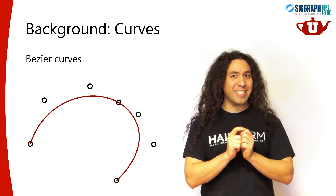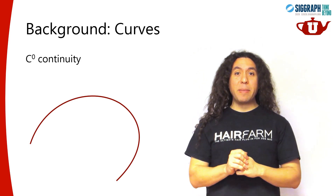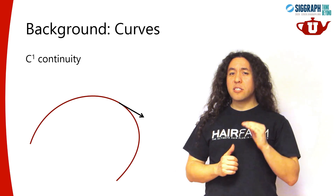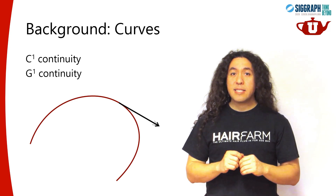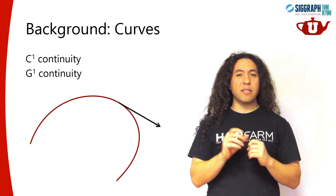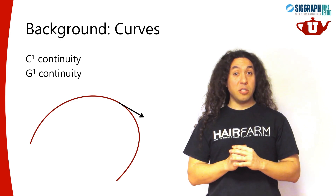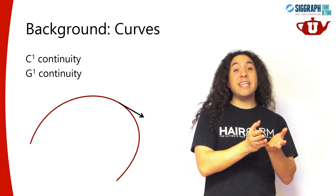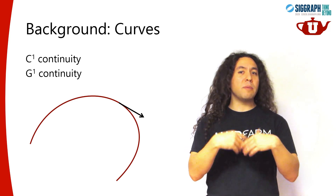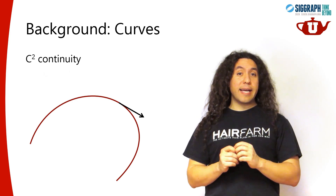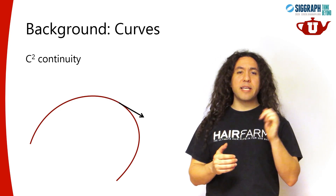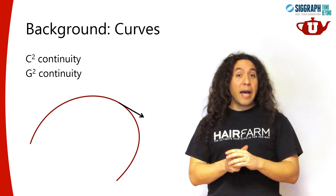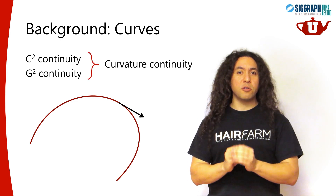So what do I mean by C2 continuity? Let's start with C0: if the curve has C0 continuity, that means it's one big curve, not made out of separate pieces. If it has C1 continuity, that means its tangent is continuous as well. If you just look at the tangent direction, that would mean G1 continuity — geometric continuity. C1 implies parametric continuity, so it actually means the length of the tangent, that is the derivative of the curve, is continuous. C1 and G1 are very closely related: given any G1 curve, without changing its shape, you can convert it to a C1 curve by reparameterizing the curve. For C2, we look at the second derivative. If the second derivative is continuous, it has C2 continuity. If just the direction of the second derivative is continuous, it has G2 continuity. Given any G2 curve, we can convert it to a C2 curve. G2 implies that the curve has curvature continuity.